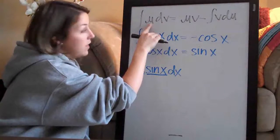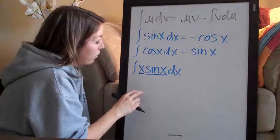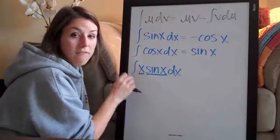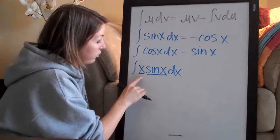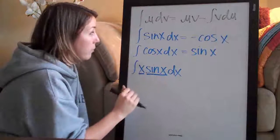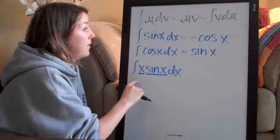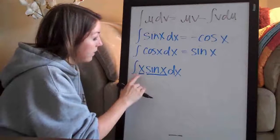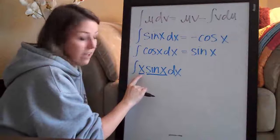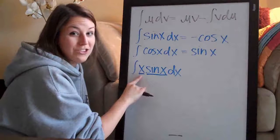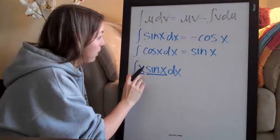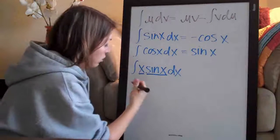I always start with u. I'm looking for what I should assign u to. So when you assign u to something, you want the derivative of that thing to be simpler than what's in the function here. So, for example, I already know by looking at this that I'm going to assign u to x because when you take the derivative of x, you get one, which is a lot simpler than x.